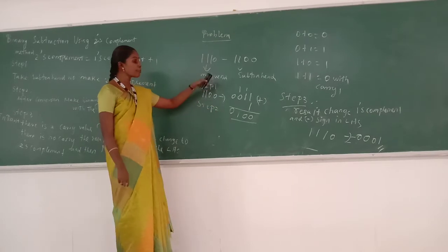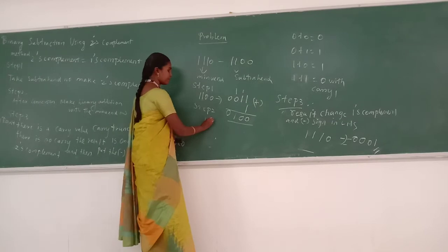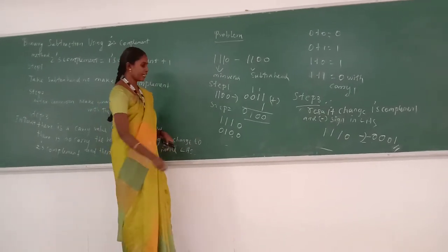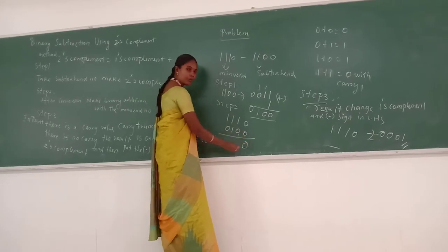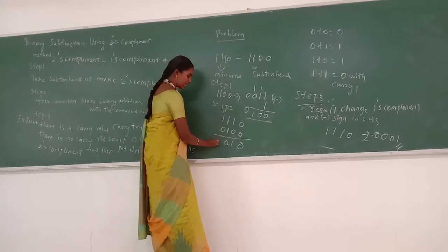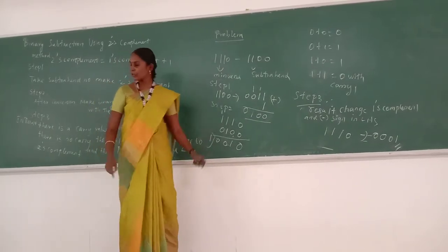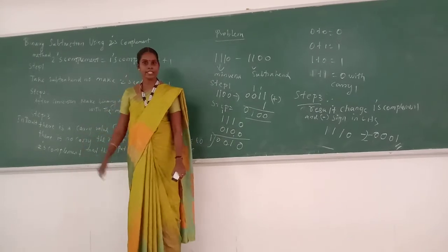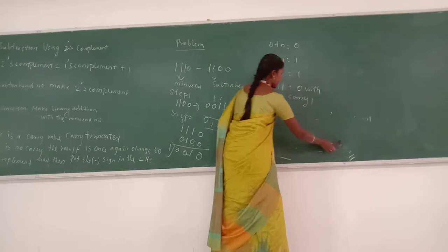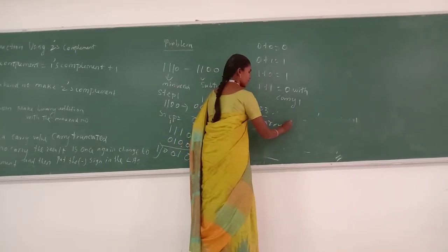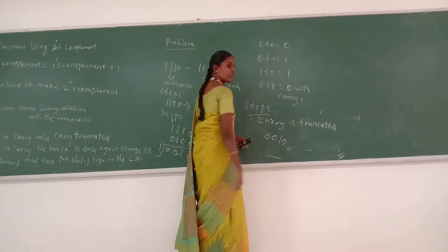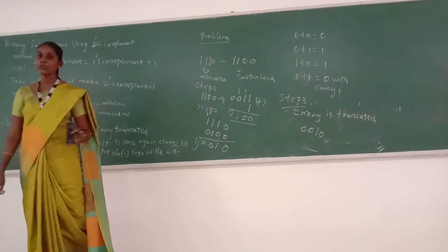Step 2: Make binary addition with the minuend number. The minuend number and the converted number are added. 0 plus 0 equals 0; 1 plus 0 equals 1; 1 plus 1 equals 0 with carry 1; 1 plus 1 gives 0 with carry 1. There is a carry value. In the two's complement method, if there is a carry value, carry is truncated — that is, you avoid the carry value. Step 3: Carry is truncated. The answer is 0 0 1 0.